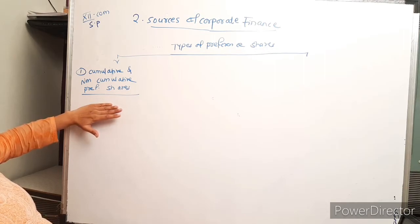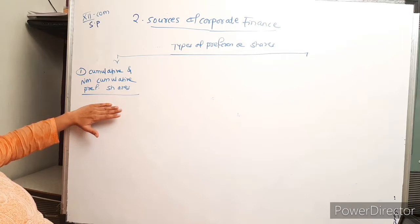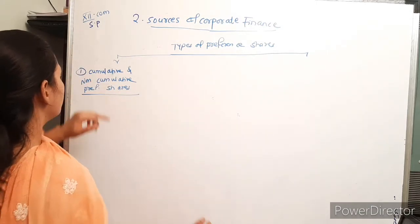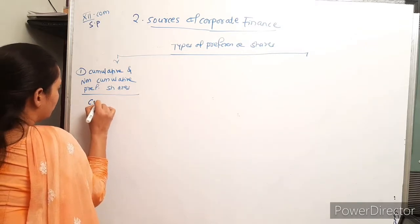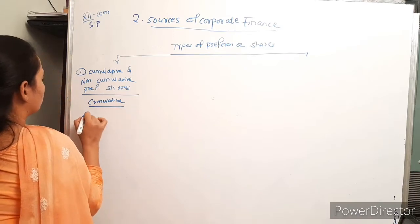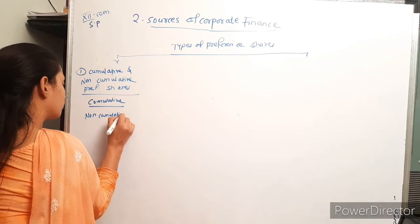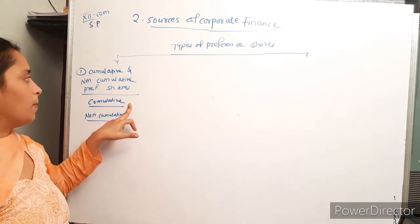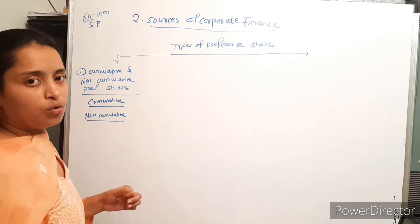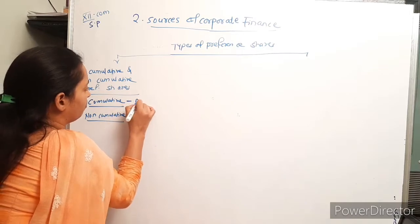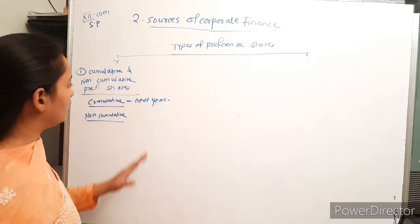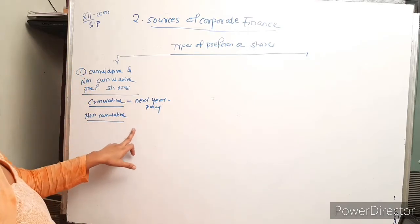Cumulative preference shares are those shares on which dividend goes on accumulating until it is fully paid. If dividend is not paid in one or more years due to inadequate profits, the unpaid dividend gets accumulated and is paid when the company performs well.